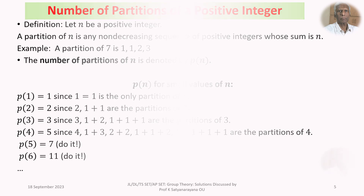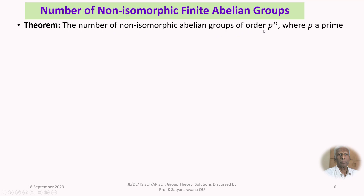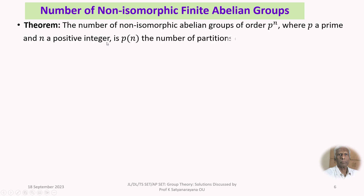We now recall a theorem studied in our MSc class. The number of non-isomorphic abelian groups of order p^n, where p is a prime number and n is a positive integer, is given by P(n) — the number of partitions of n. So for orders like 2², 2³, 3², 3³, or 11⁴, you can determine how many non-isomorphic abelian groups exist.